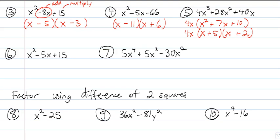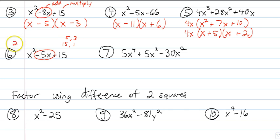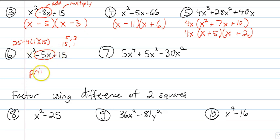Now I can reverse FOIL this piece because it's just a trinomial with no coefficient in front. Two numbers that multiply to 10 that add to 7 — hopefully you can come up with 5 and 2. Now this one — I need two numbers that multiply to 15. It could be 15 and 1, or 5 and 3. But is there any way to add these together to get negative 5? No. If you do the discriminant b squared minus 4ac: 25 minus 4 times 1 times 15, which is 25 minus 60, which is negative 35 — not a perfect square. So you can't factor it. We call this prime. Like a prime number that can only be itself times 1, we can't factor or divide anything out of this.